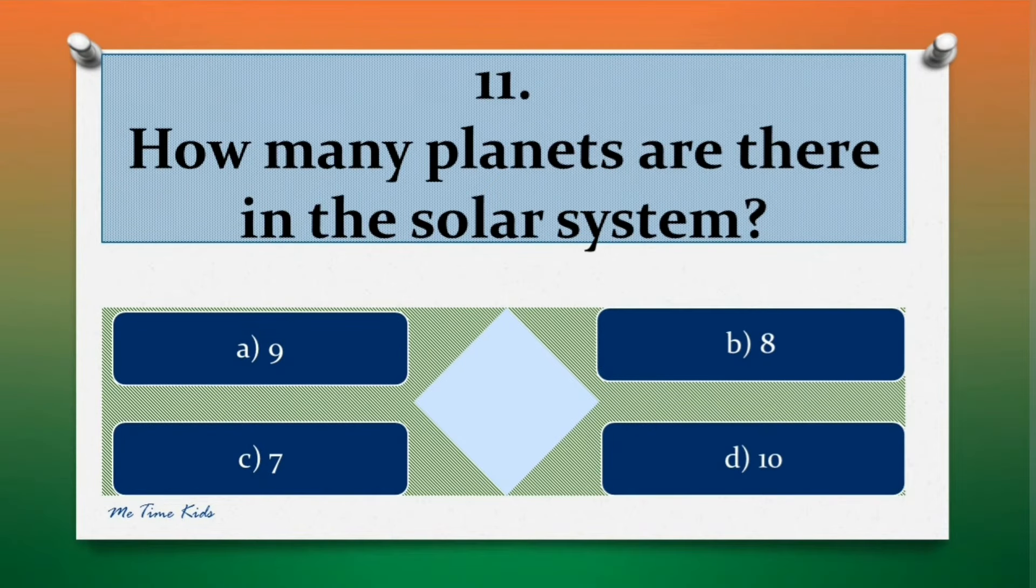Question 11. How many planets are there in the solar system? Options are: a. 9, b. 8, c. 7, d. 10.